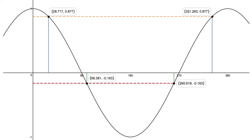Now similarly, if we look at the second line we had, negative 0.163, we did pick up the first solution of 99.381, and the second solution is obviously 360 minus 99.381, or 260.619.